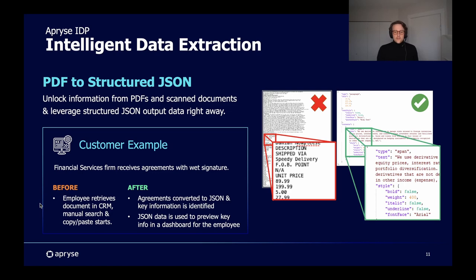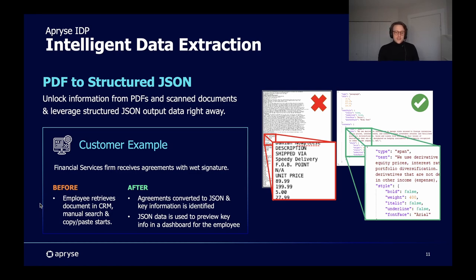A real-life example is a financial services firm we work with. They generate agreements for clients and employees that need to be signed, scanned, and resubmitted to a CRM. Staff members had to manually search through stored PDF documents to retrieve information, sometimes relying on visuals if the document was never made searchable. With PDF to JSON output, the entire scanned document can be extracted to a structured JSON output. Relevant data points are then identified and implemented from the JSON anywhere you want to display it — such as a staff dashboard — so they don't even have to open the PDF anymore. I'll now hand the stage to John to demo PDF to structured JSON conversion.